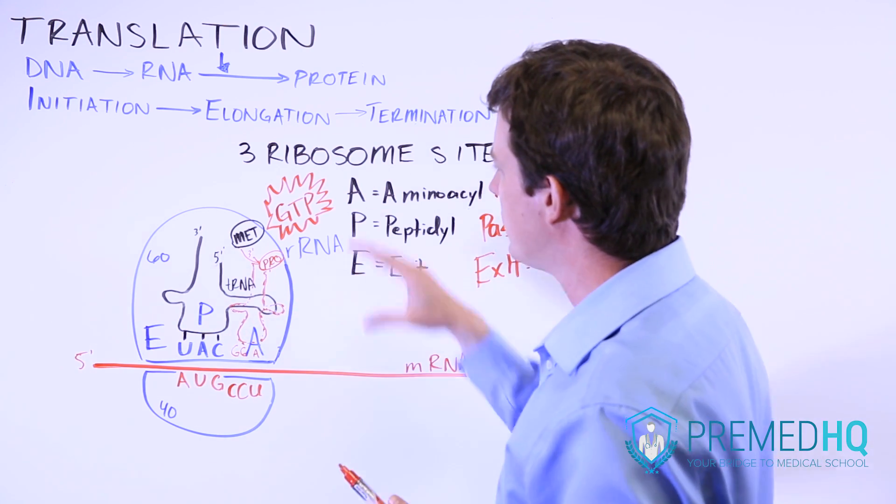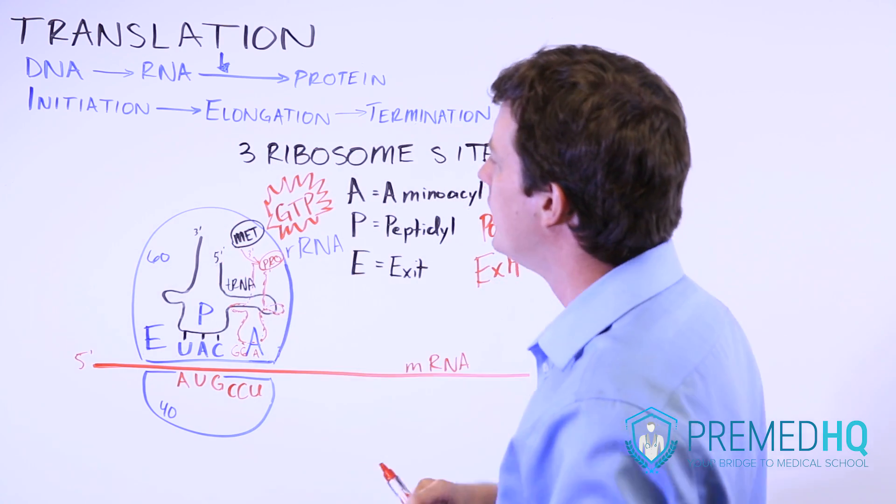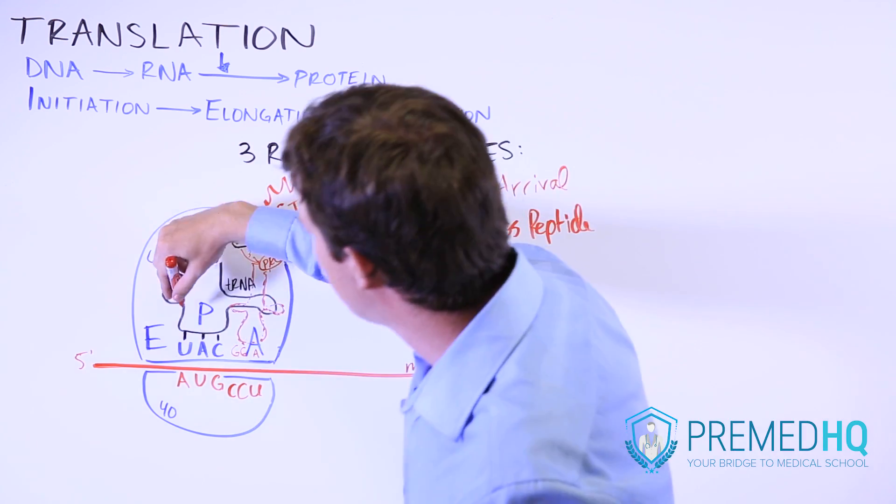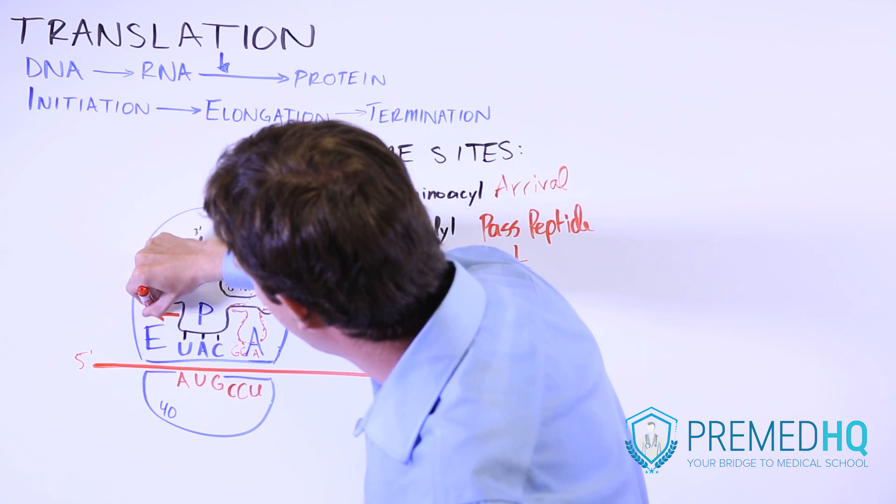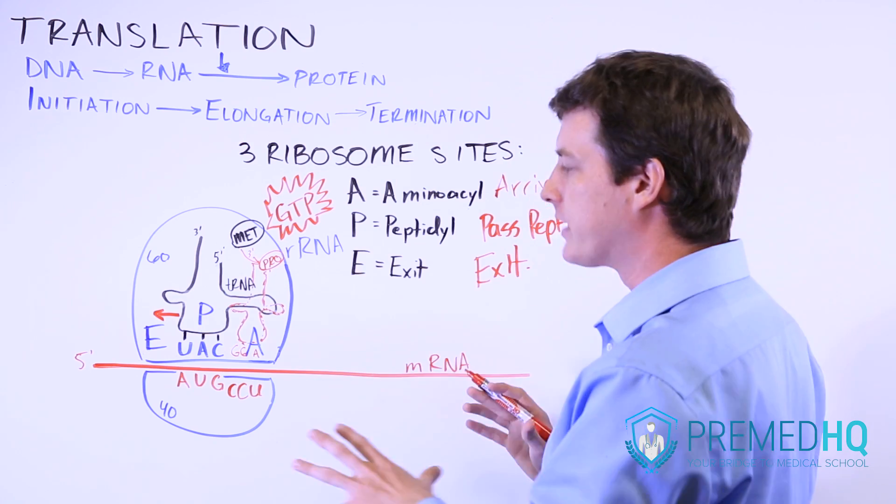Now the way that this happens is that the GTP catalyzes this, it uses some energy, and as this occurs, the P site will move over to the E site and it will get ready to exit.